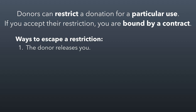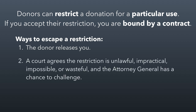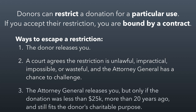So what do you do if you can't get the donor to release you? There are two other options. One is you can go to a court and get the judge to agree with you that the restriction is either unlawful, impractical, impossible, or wasteful. The attorney general of the state also has an opportunity to challenge your request. Alternatively, you can go to the attorney general instead and ask him or her to release you, but that's only possible if the donation was less than $25,000, was made more than 20 years ago, and the new use still fits the donor's charitable purpose. If you're going to get a release from a restriction, option one is your best bet, option two is your next best bet, and option three exists primarily because sometimes small restrictions can just be annoying for the accounting.